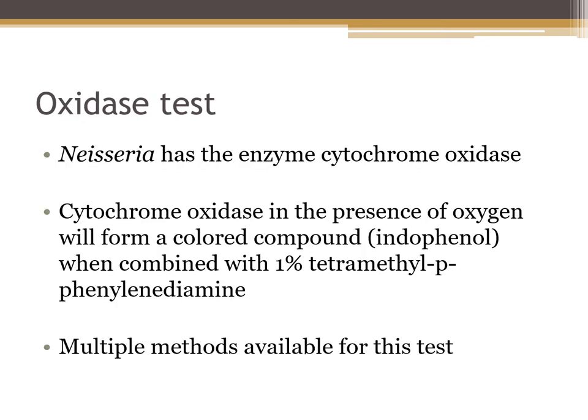If you're not sure if you're dealing with a Staphylococcus or a Neisseria, one test you can do is the oxidase test. Neisseria has the enzyme cytochrome oxidase, which in the presence of oxygen will form a colored compound known as indophenol — a purple color compound — especially when combined with 1% tetramethyl-p-phenylenediamine. This is similar to the Microdase test, but the Microdase test uses a 6% solution, whereas here in the oxidase test we're using a 1% solution.